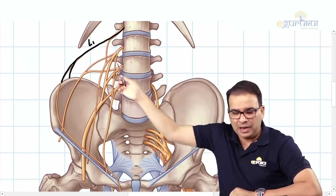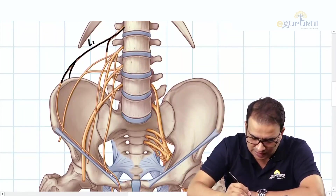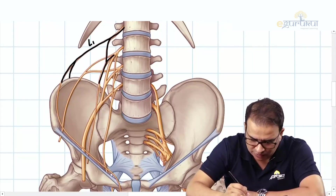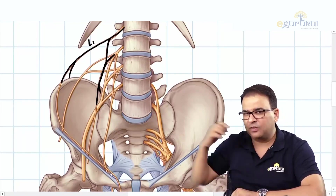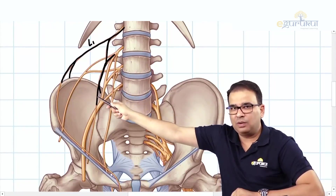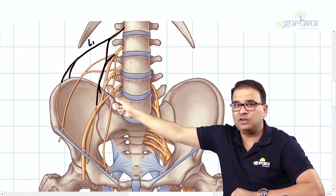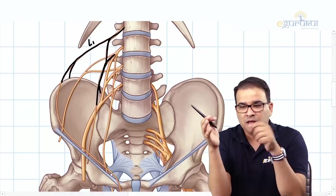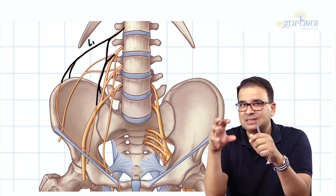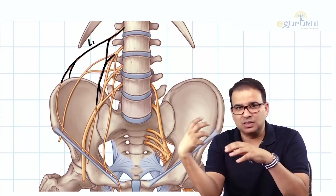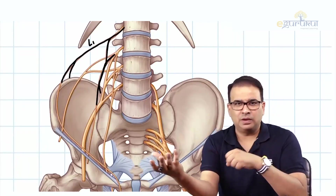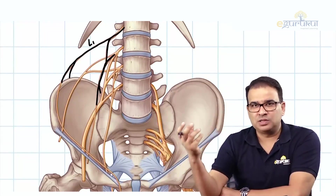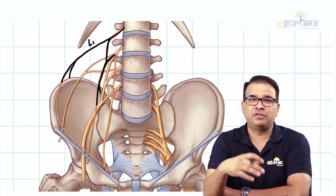From L1 and L2 you can see the genitofemoral nerve, which divides into two branches: the femoral branch and the genital branch of the genitofemoral nerve. The femoral branch supplies the skin over the femoral triangle, and the genital branch supplies the cremasteric muscle in the spermatic cord and scrotum.